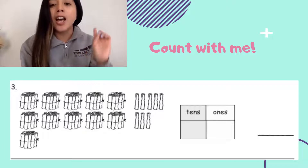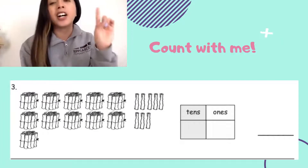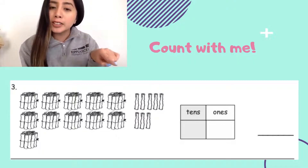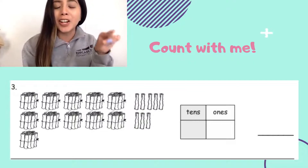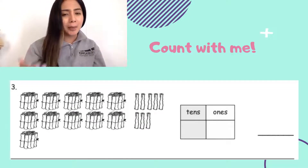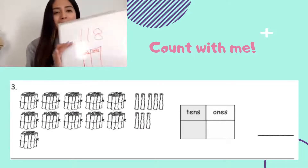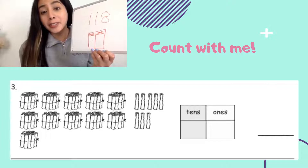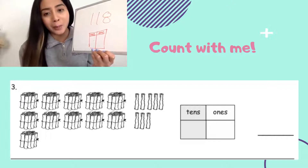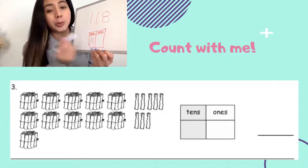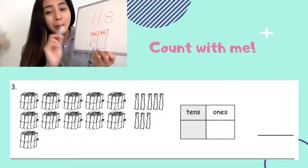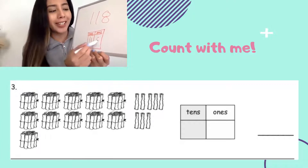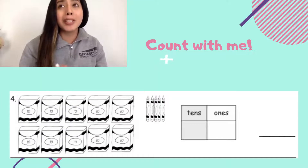Let's count by ones now: 111, 112, 113, 114, 115. Let's move to that last set: 116, 117, 118. How many sticks are there? 118 sticks. How many 10s? There were 11 groups of 10. And how many ones — how many of those sticks were all by themselves, not in a bundle of 10? 8 ones. That was a really big number that we got to. We almost got to 120.